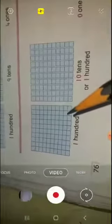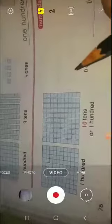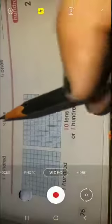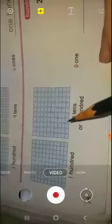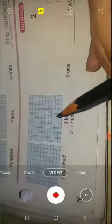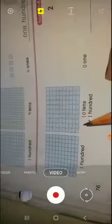Next, one hundred, ten tenths. Aap isko dhekhenge. Isko hum ten tenses bhi bol sakti hai na? Kyunki ten hai long boxes. One, two, three, four, five, six, seven, eight, nine, ten hai na? Now if we don't say 10 tenses and all cubes, if we count all the cubes, join all the cubes, then these 100 cubes will be 100. So we can say 100. So 1 plus 1 is 200.